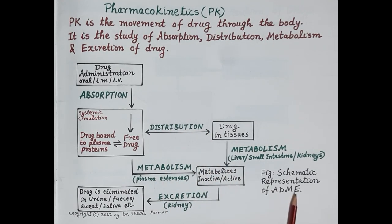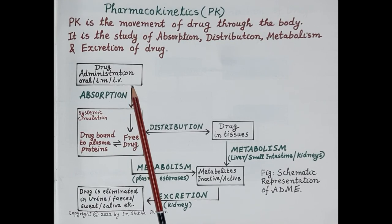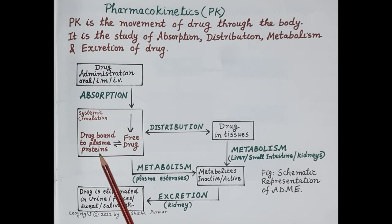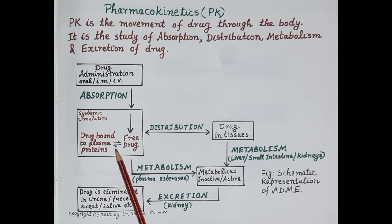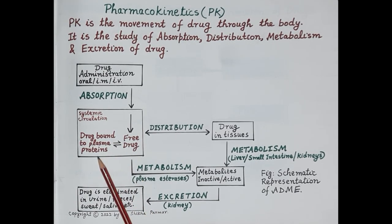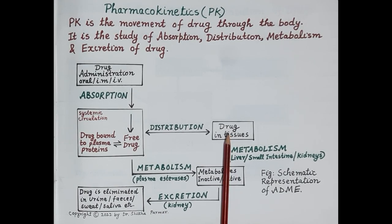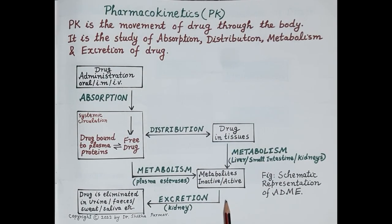This figure gives a schematic representation of administration, distribution, metabolism, and excretion of the drug. Once the drug is administered, it gets absorbed into the systemic circulation. In the blood, plasma proteins like albumin are present. Most drugs bind reversibly to these plasma proteins, so in the blood the drug is present in two forms: as a free drug and as the drug bound to plasma proteins. From the blood, the free drug is distributed to body tissues and also reaches its site of action, binds to receptors, and produces its therapeutic effect. Metabolism and excretion occur simultaneously along with drug distribution.